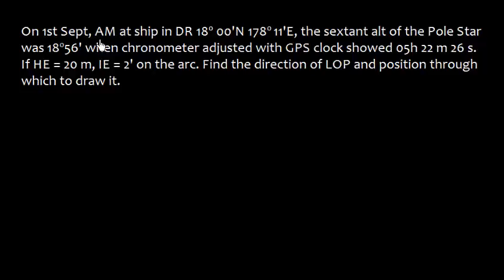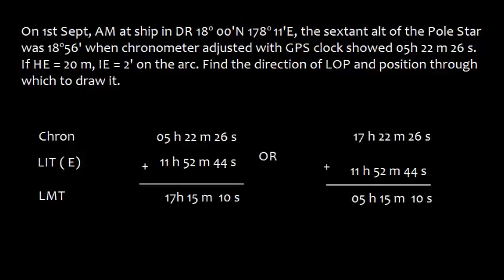On 1st September AM at ship in DR position, the sextant altitude of Polaris is given when chronometer adjusted with GPS clock showed this time, which is 05h 22m 26s. If height of eye and index error are given, find the line of position and position through which to draw it.